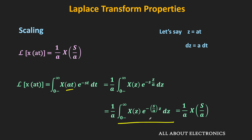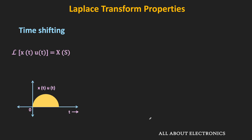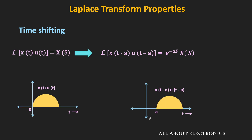That is the scaling property of the Laplace transform. Now let us see the time shifting property. As per this property, if the Laplace transform of x(t) is X(s), then the Laplace transform of x(t-a)·u(t-a) equals e^(-as)·X(s). Here u indicates that the function exists only for t greater than or equal to 0. When the function is time shifted, u indicates the function exists only for t greater than or equal to a, where a is greater than or equal to 0.